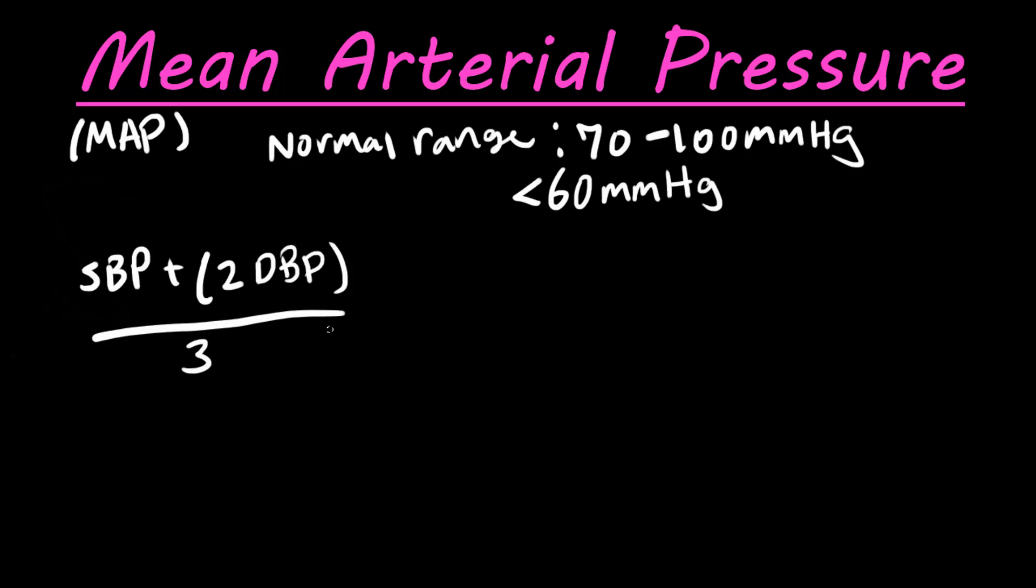Another equation you might sometimes find, but it's the exact same thing, just another way of writing it, is the mean arterial pressure equals the diastolic blood pressure plus the pulse pressure, or another way to write that is systolic blood pressure minus diastolic blood pressure, and all that divided by 3. So these are two different ways to write the same equation. You're going to get the same mean arterial pressure when given a blood pressure value.